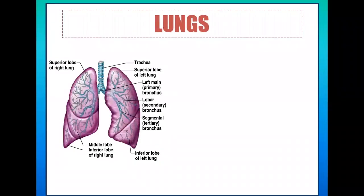To answer the first question — how the lungs work — we have to look at their anatomical parts and see how the lungs function in the respiration process. Let's look at this illustration and describe its parts. We can see that the lungs are fairly large organs. They occupy entirely the chest cavity, or thoracic cavity, and are protected by the rib cage.